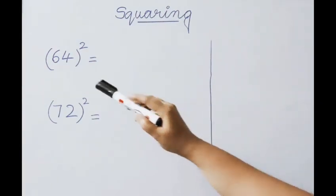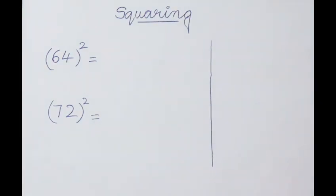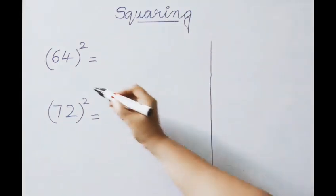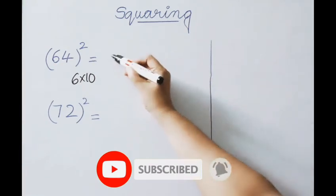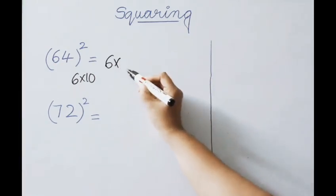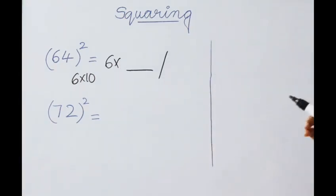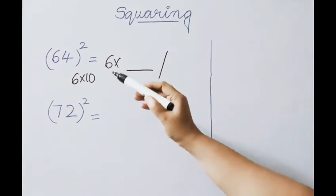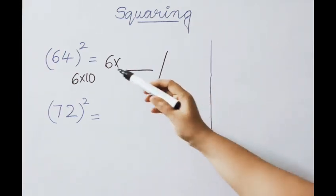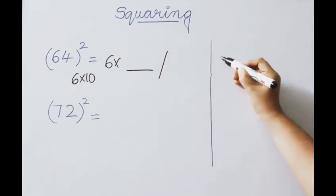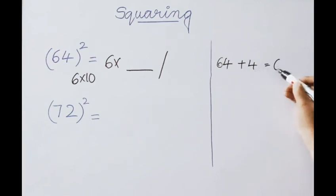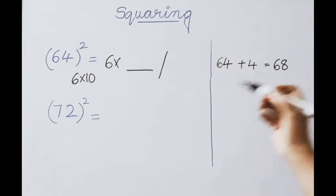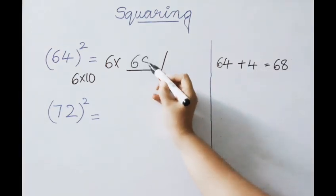Next example: 64 squared. The base value here is 60. How do you get 60? That is 6 times 10, so we must multiply the first part answer by 6. For 64, the excess value above 60 is 4. Add both: 64 plus 4 gives 68. Write down 68.